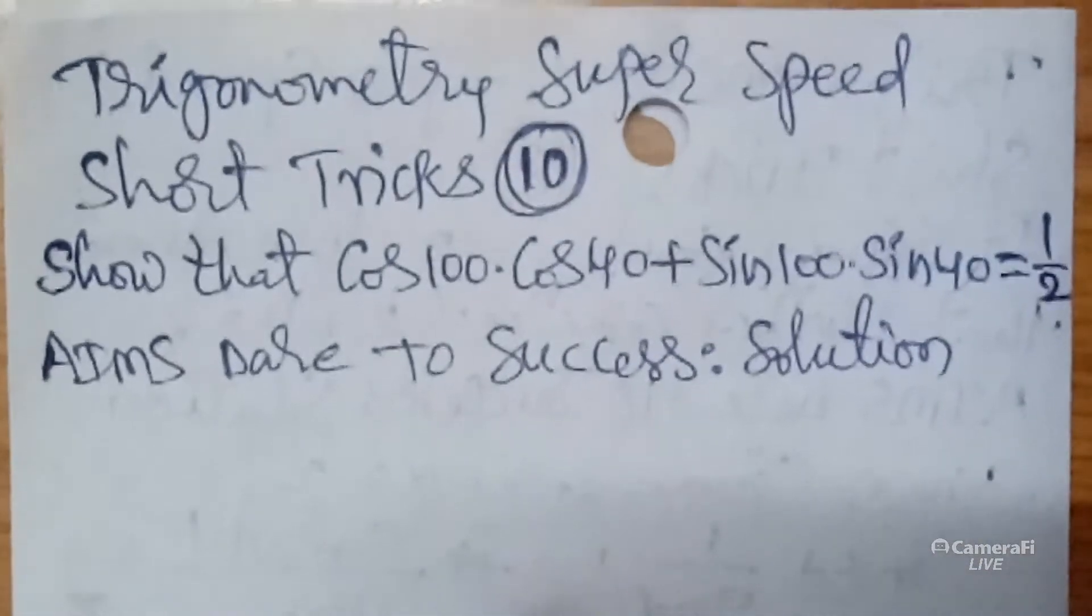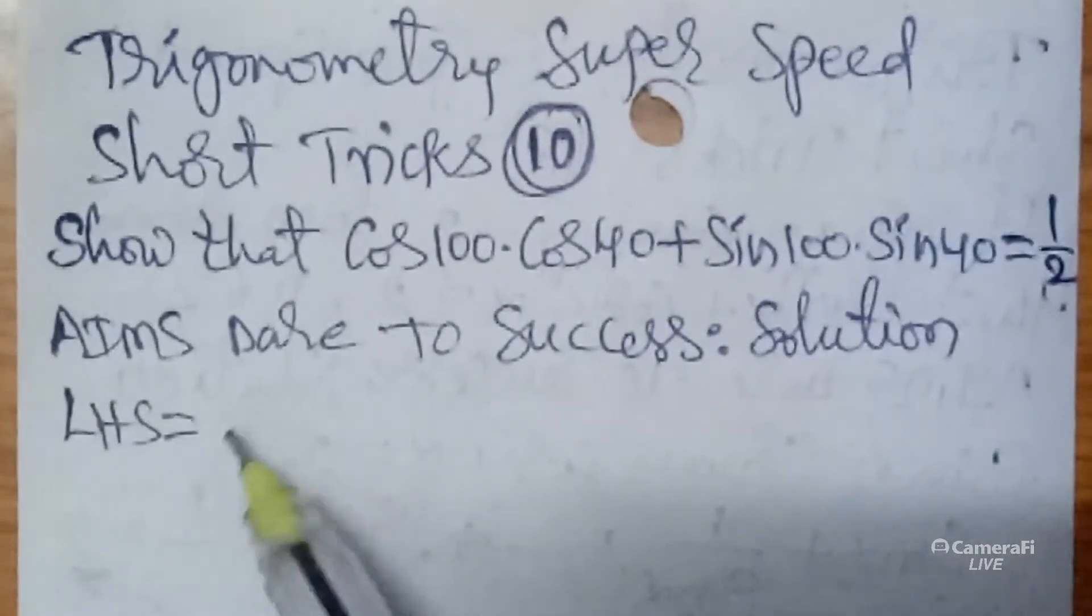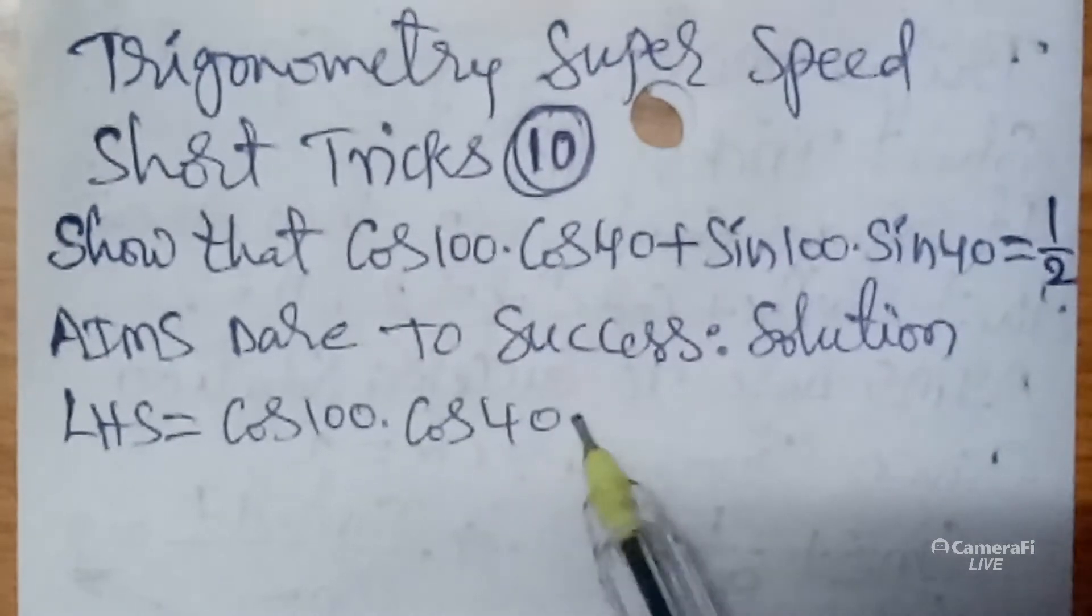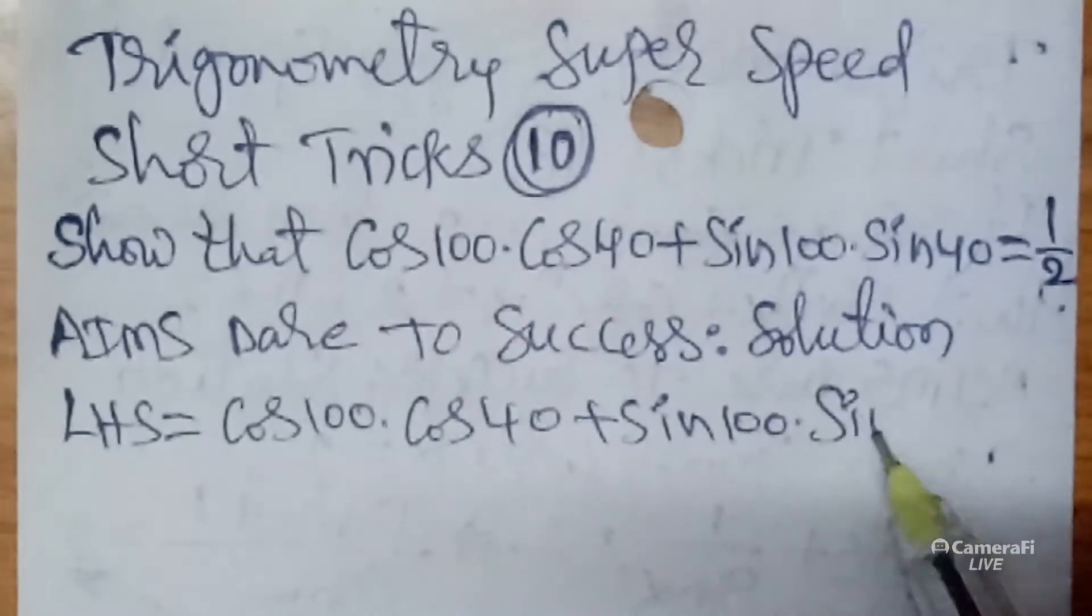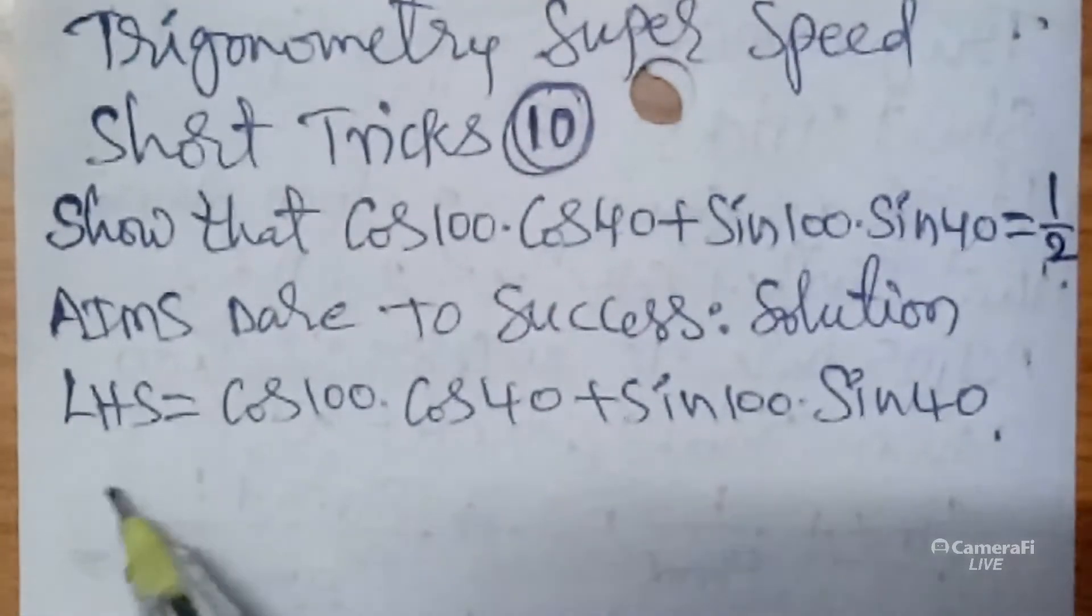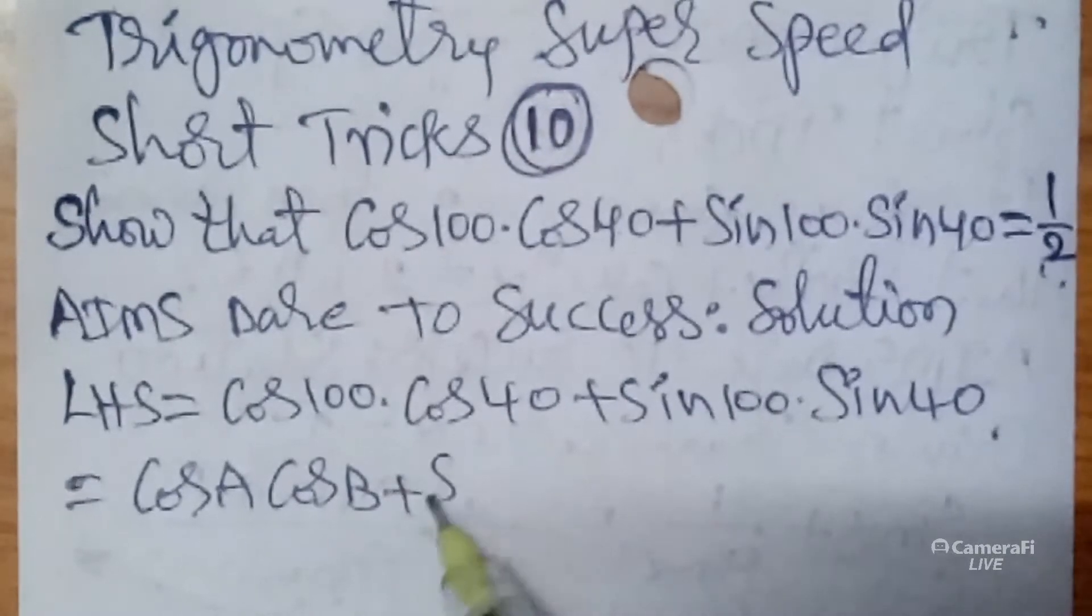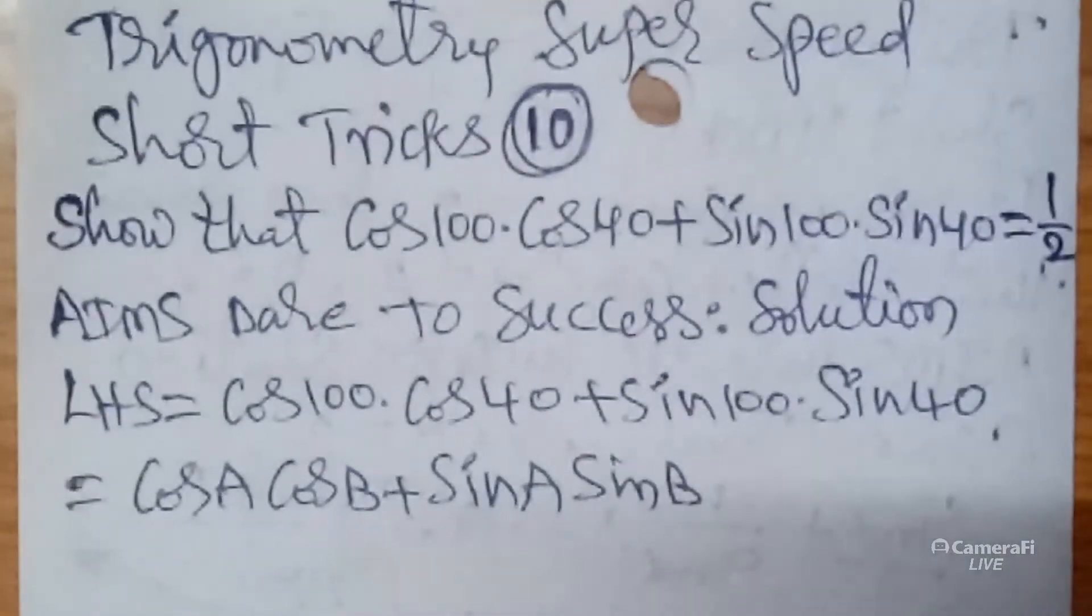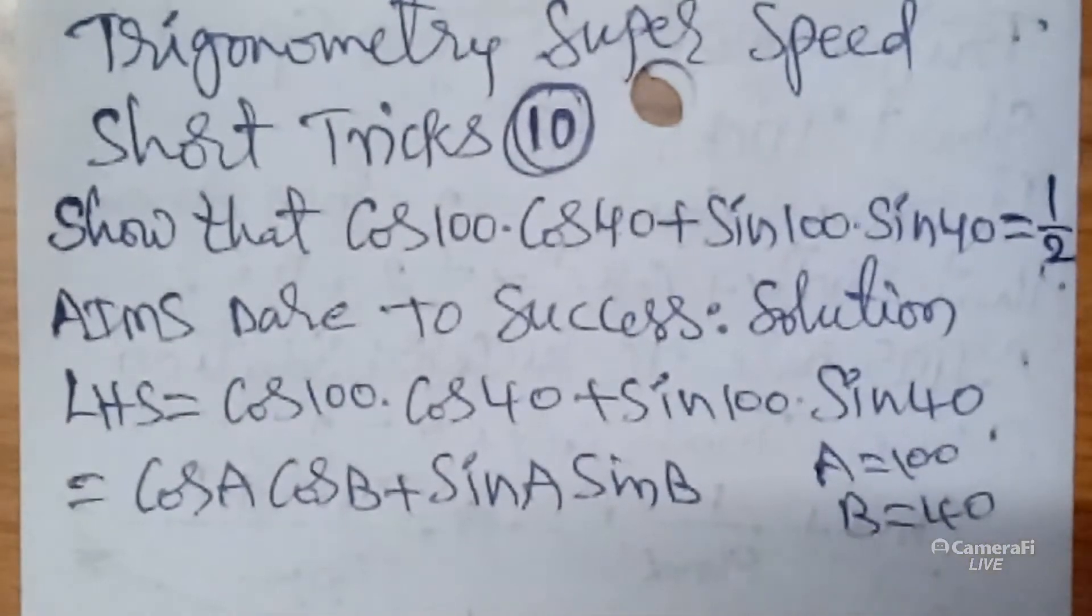So the answer, the LHS value: I wanted to write LHS value cos 100 cos 40 plus sin 100 sin 40. This is in the form of cos A cos B plus sin A sin B. Here A is 100 and B is 40.